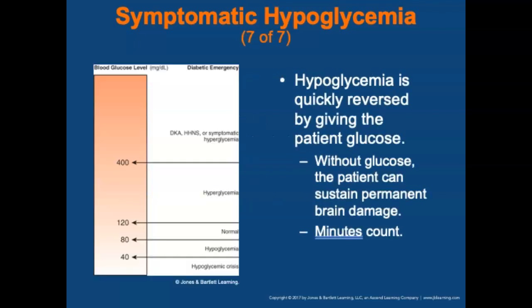Hypoglycemia can be quickly reversed by giving the patient sugar. Without sugar, however, the patient can sustain permanent brain damage within minutes.